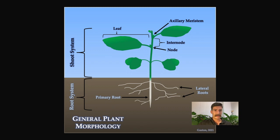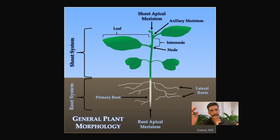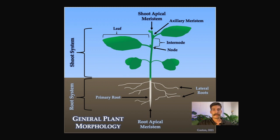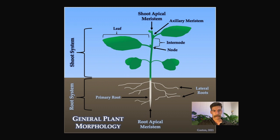The next thing we need to talk about is the apical meristems. At the top of the shoot, the plant will be growing, and the region where growth occurs is called the apical meristem. There's one in the shoot and one in the root — the shoot apical meristem and the root apical meristem. In the meristem, there are some cells called totipotent cells, which are like stem cells that can become whatever they need to be.